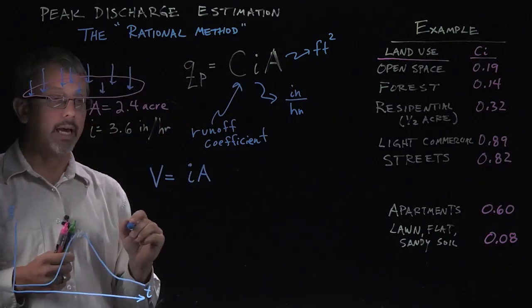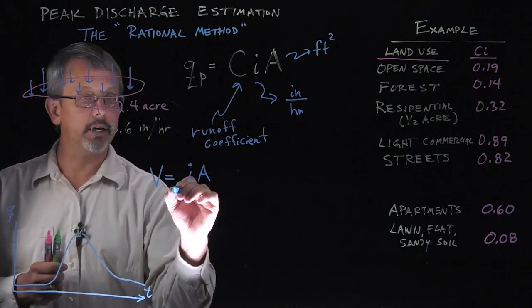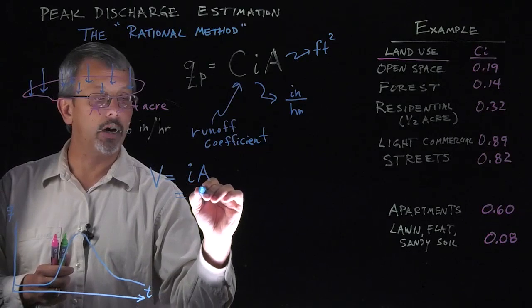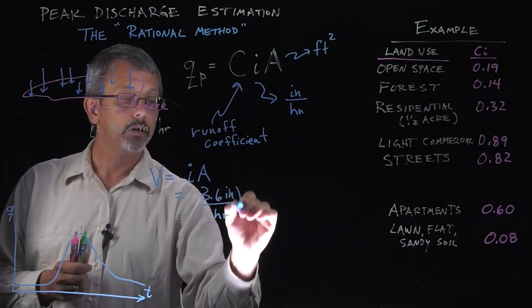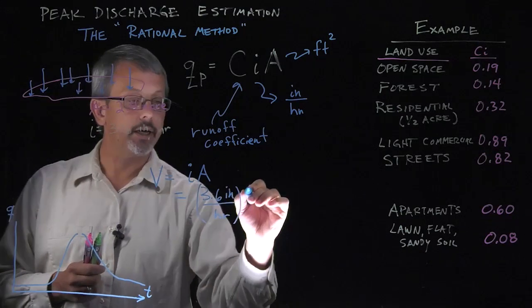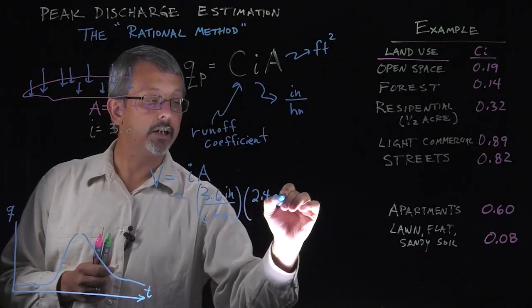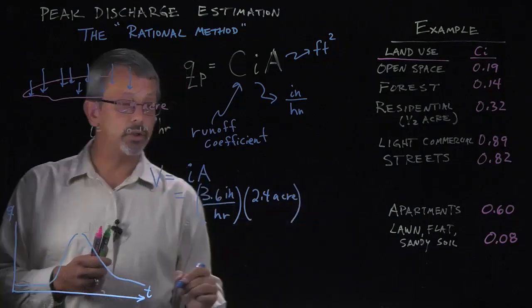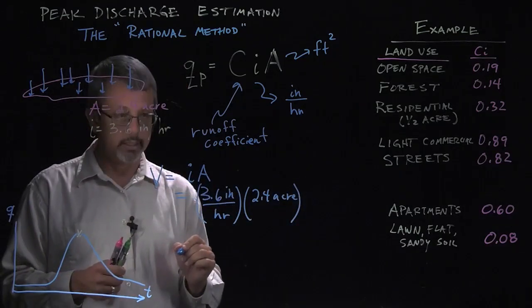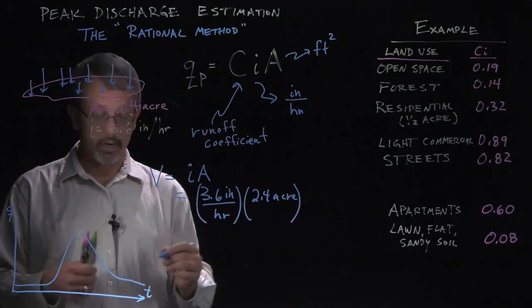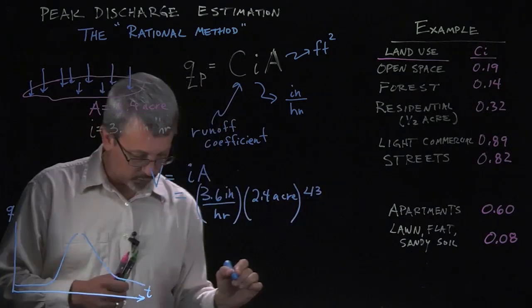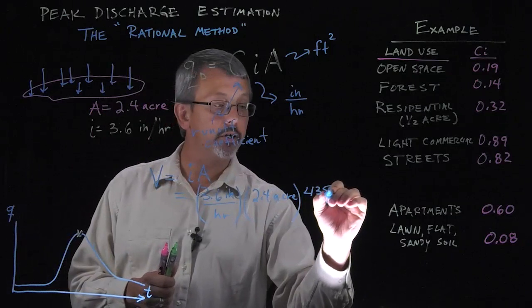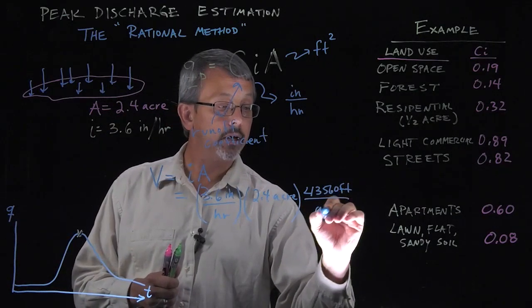So V equals I*A, volume equals intensity times area. So we multiply our 3.6 inches per hour times the area of 2.4 acres. And now we're going to need to do some conversions to actually get an appropriate set of units.